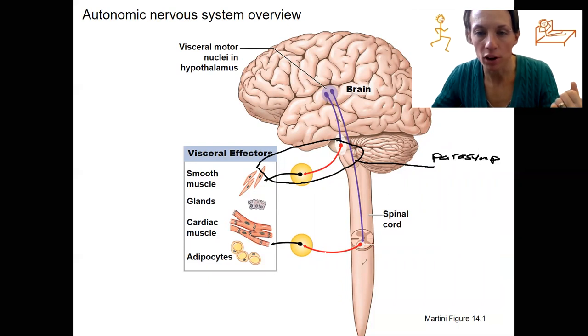There would also be potentially a motor neuron in the sacral region as well, as part of the parasympathetic nervous system. This is our sympathetic nervous system, and I can tell by the anatomy.